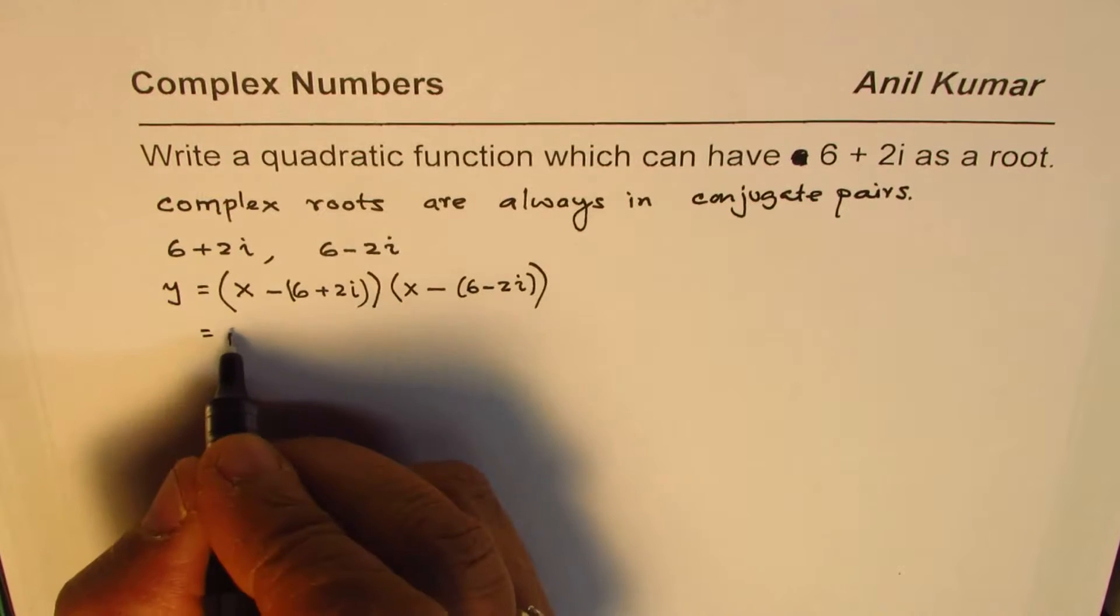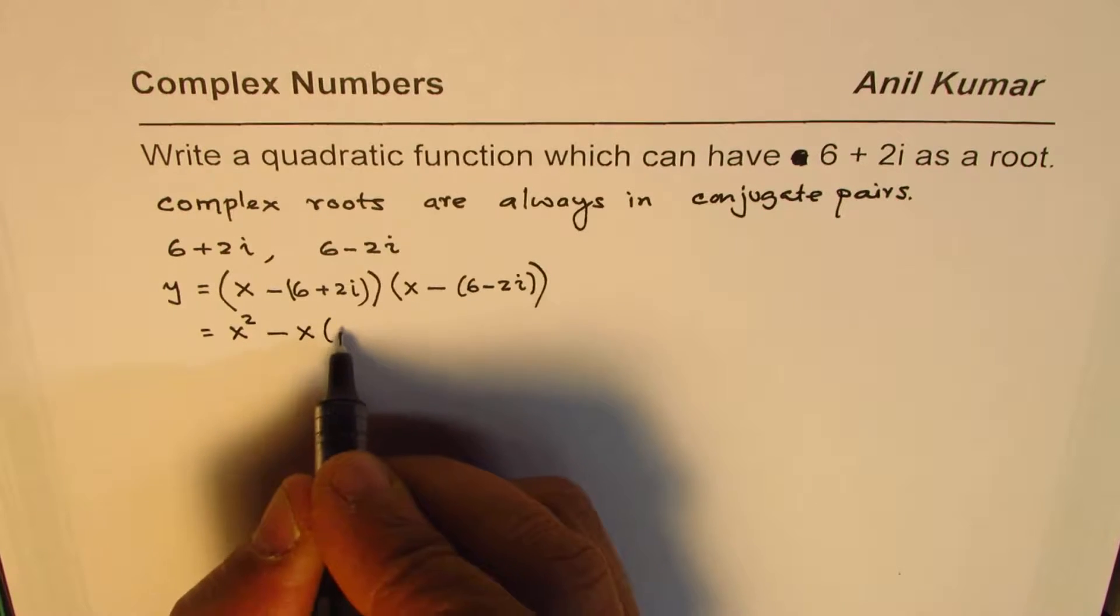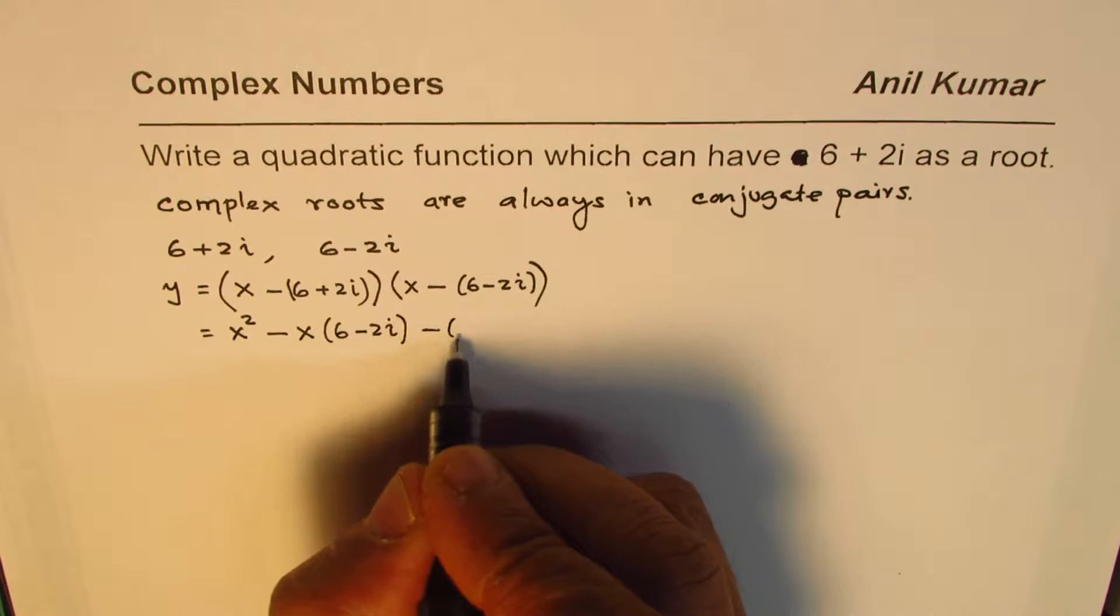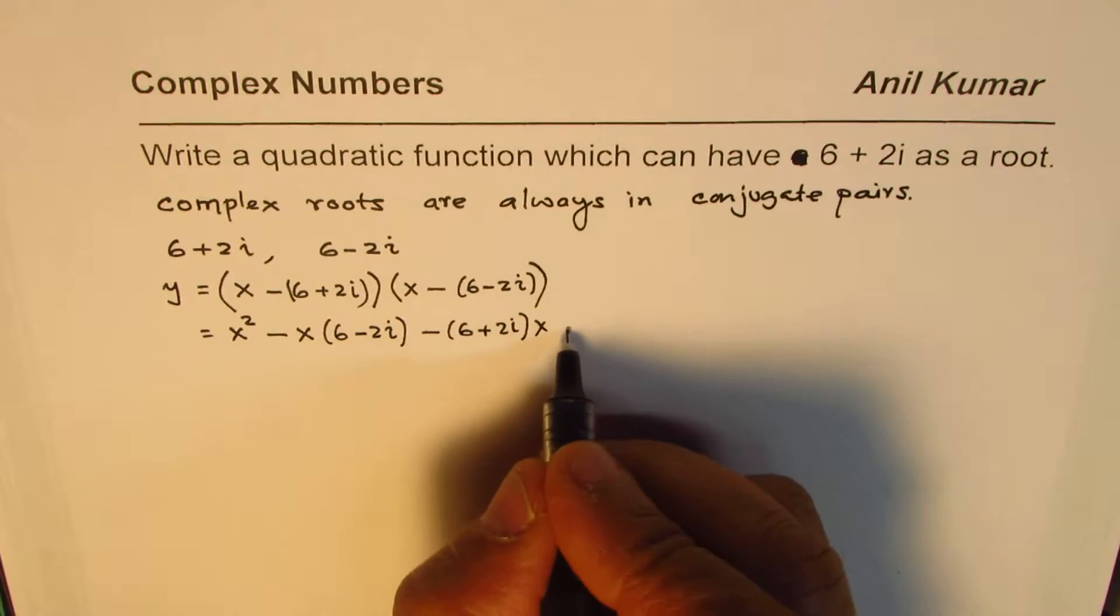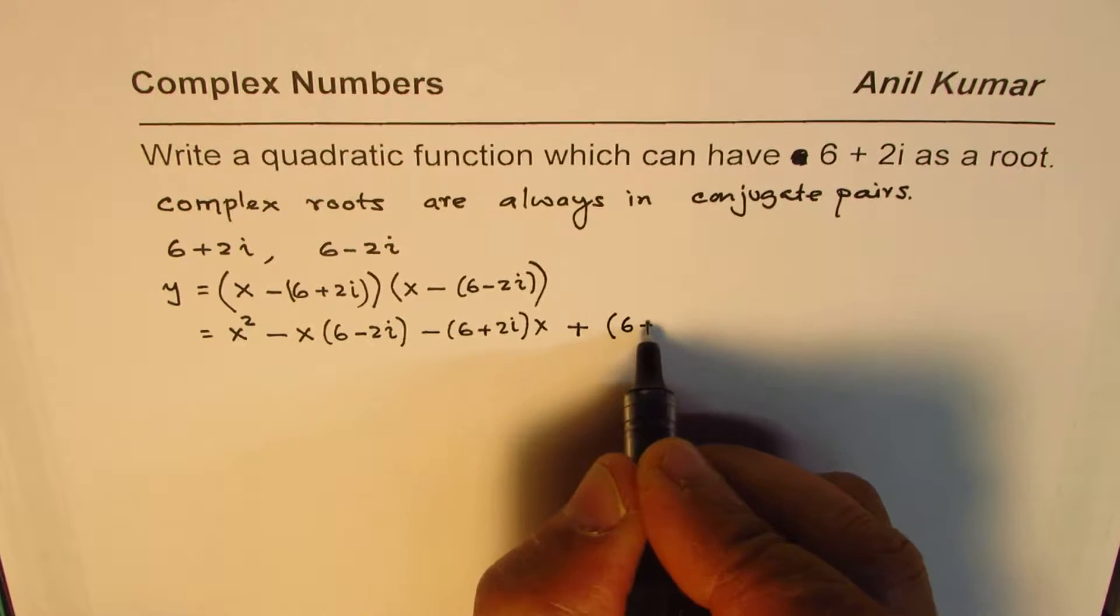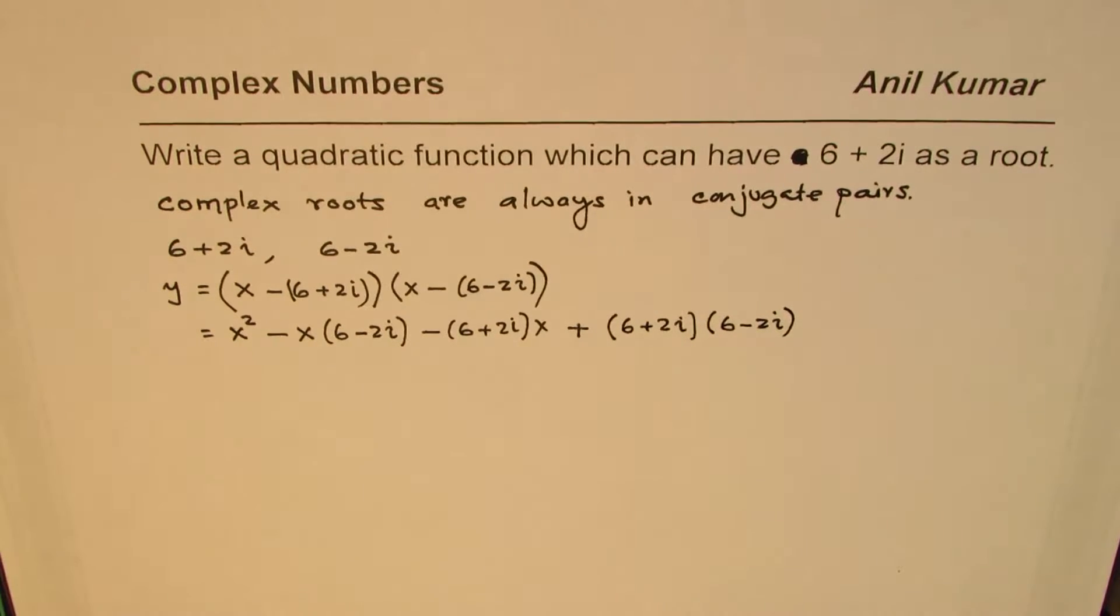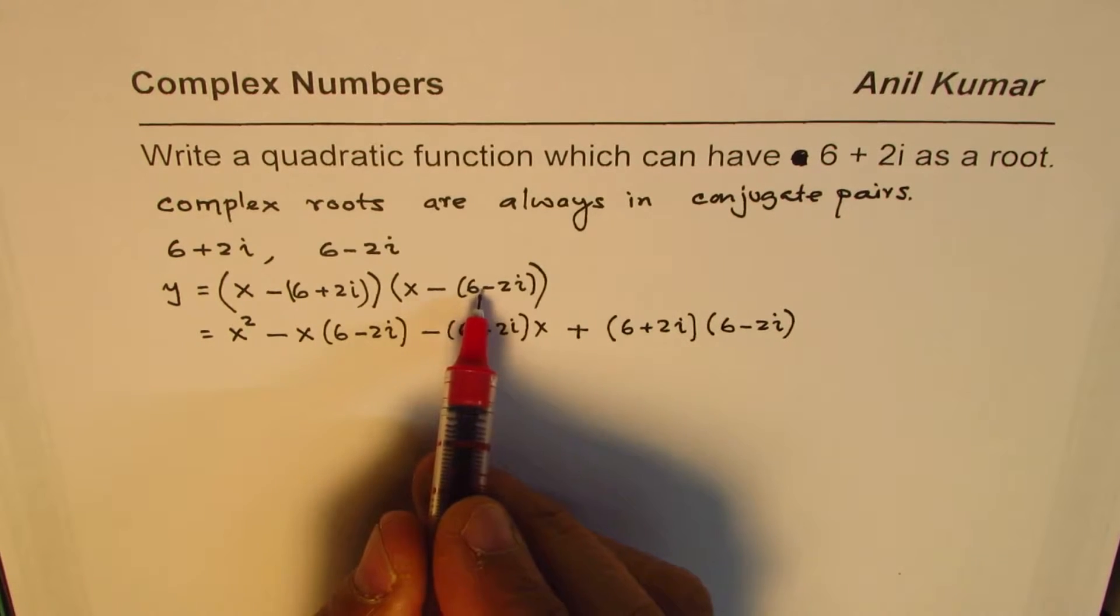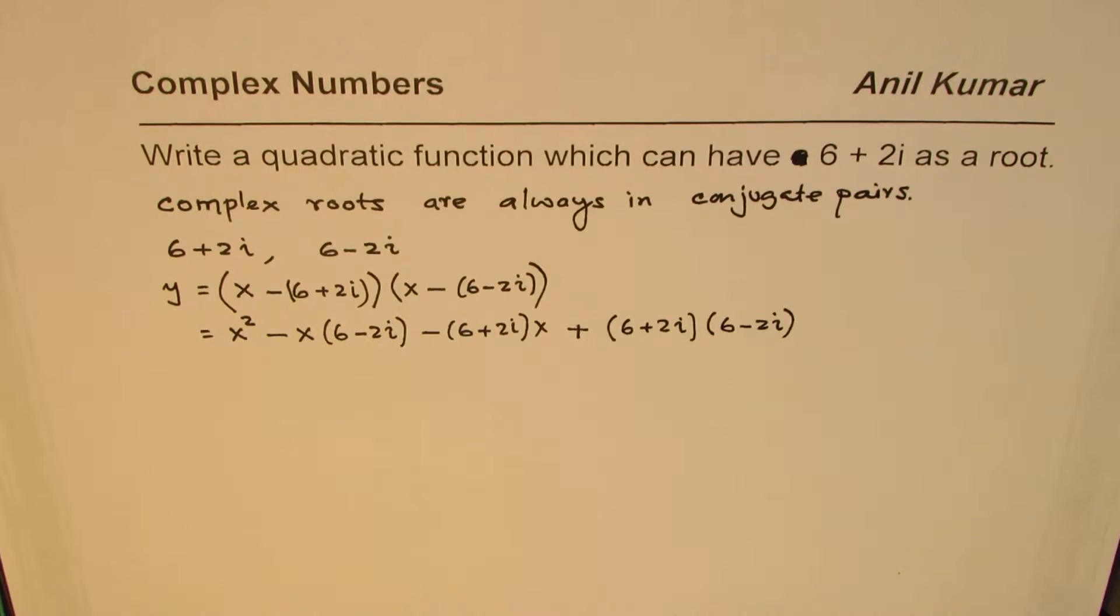So, we have x times x which is x square. Then, we have x times minus x times 6 minus 2i. Let us multiply with the second factor, which is minus 6 plus 2i times x and then we have minus minus becomes plus product of these two, which is 6 plus 2i times 6 minus 2i. So, we get this kind of an expression. Now, you will see that the middle term is like combination of two roots and the last term is product. So, that is sum and product. I hope that reminds you that any quadratic equation, given its root, could have been written as equal to x square minus.